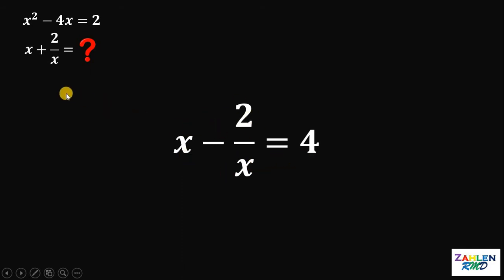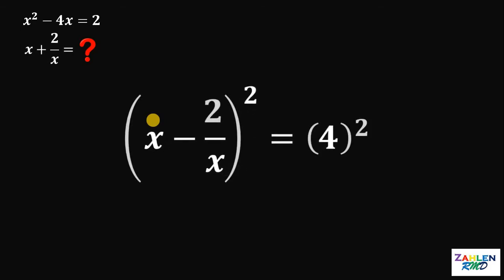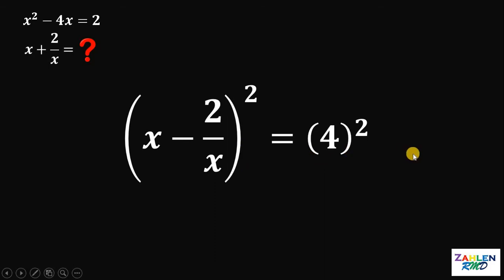As you can see, this is almost similar to what we need to find. The next question is: how are we going to find the value of x plus 2 over x? Here's what we can do — let's square both sides. So we have (x minus 2 over x) squared equals 4 squared.